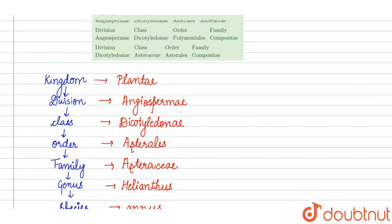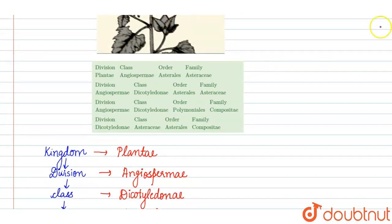So in the options we can see the first option Division is Plantae, but the division of Plantae is Angiospermae, so the first option is wrong. Then comes second option, Division is Angiospermae. Then next comes Class which is Dicotyledon, which I have said earlier. And the Order is Asterales and the Family is Asteraceae. So the second option is the correct option.